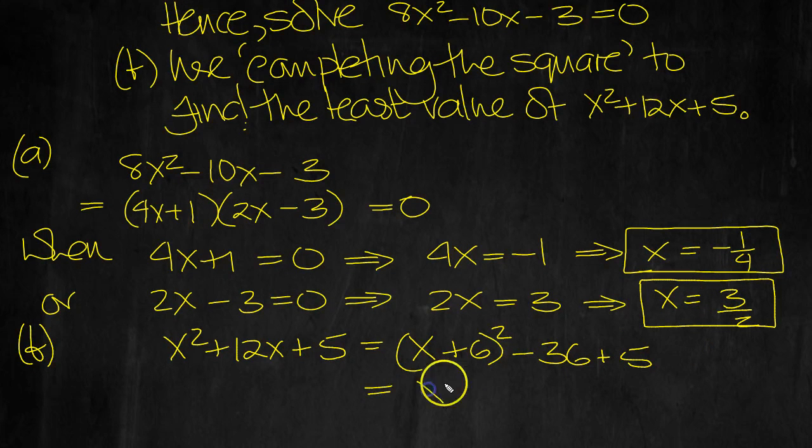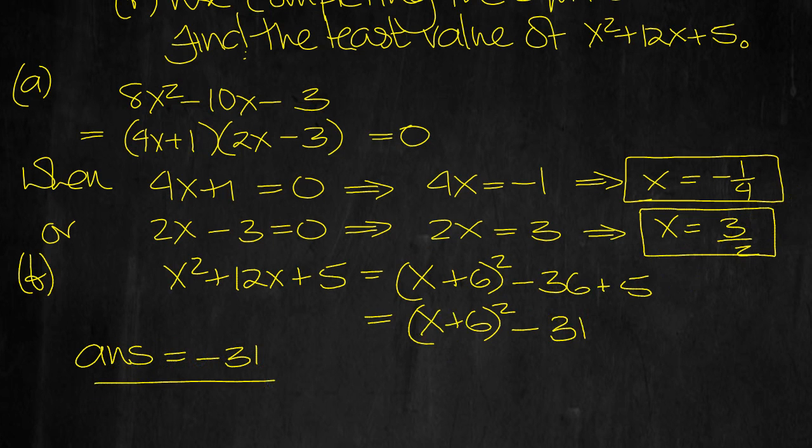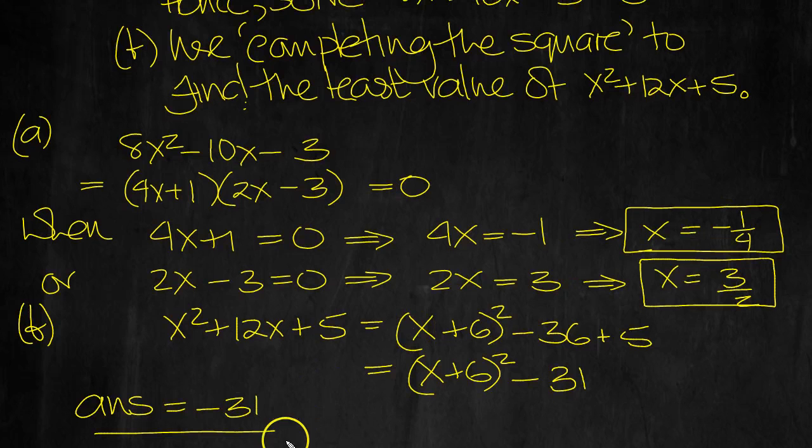And that's equal to x + 6 squared minus 31. This is always positive, or 0 when x is minus 6. So we can see the smallest value will be minus 31. OK, second. Thank you.